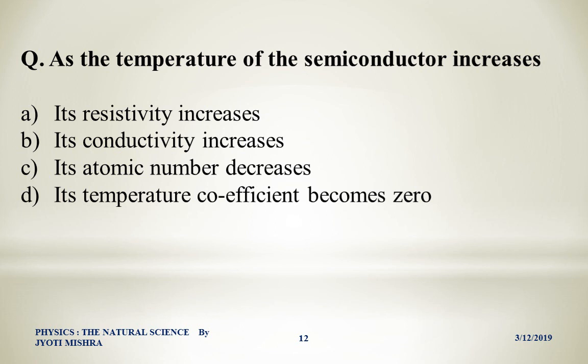I have a question for you to answer in the comment box: When impurity is added to a conductor, what happens? Option A: its resistivity increases. Option B: its conductivity increases. Option C: its atomic number decreases. Option D: its temperature coefficient becomes zero. Please write your answer in the comment box. Thank you for watching — if you haven't subscribed to this channel, please do so to see the next videos. Keep learning, bye bye, take care.